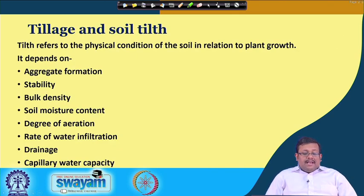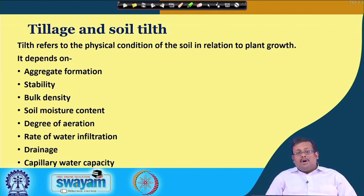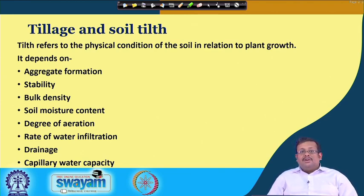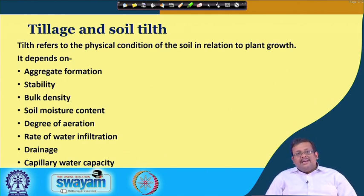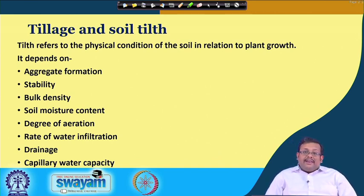What is soil tilth? Tilth is basically the physical condition which occurs after tillage. In other words, tilth refers to the physical condition of the soil in relation to plant growth. A good tilth of a soil basically depends on aggregate formation and its stability, bulk density, soil moisture content, degree of aeration, rate of water infiltration, drainage, and capillary water capacity.